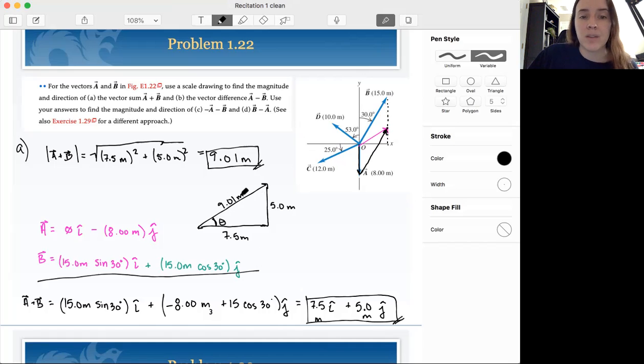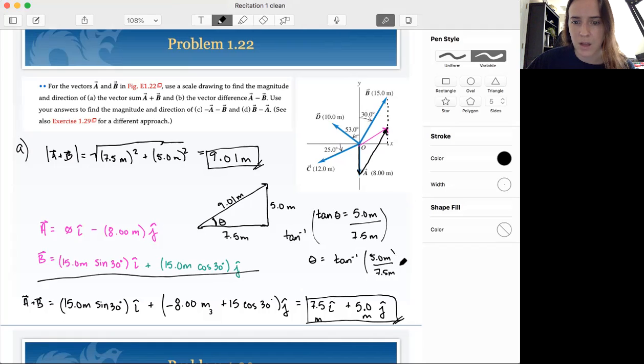Anyways, so now that we have the magnitude we can use any trig function to figure out what this angle is. Personally, I'm a fan of inverse tangent. So we know that tangent is opposite over adjacent. So opposite is our five meters, adjacent is our 7.5 meters. So if we take the inverse tangent of both sides, tan minus 1 tan minus 1 cancels out leaves us with theta is equal to the inverse tangent of five meters over 7.5 meters.